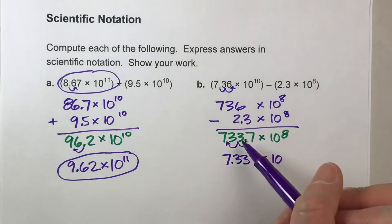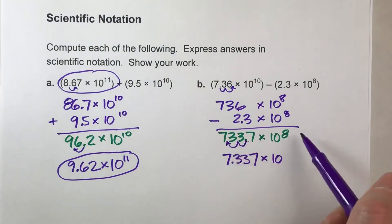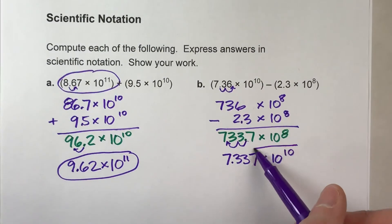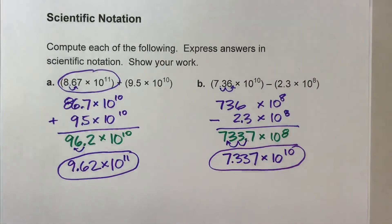Now since I made this two steps smaller, I need to make the power of 10 two steps bigger to compensate for it. There's my final answer: 7.337 times 10 to the 10th power.